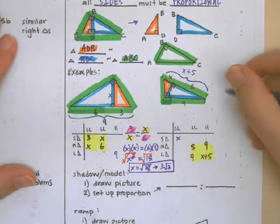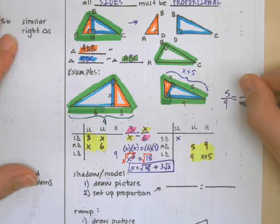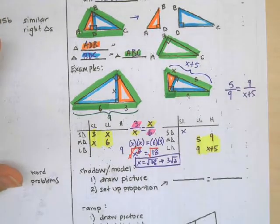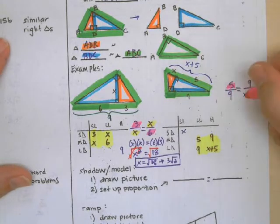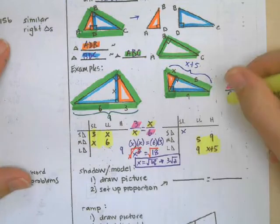So we're going to take those items over here to the side and we're going to cross multiply. So I'm going to cross multiply 5 with X plus 5 and 9 with 9.